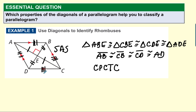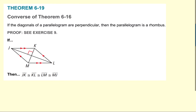When all the sides of a parallelogram are congruent, it must be a rhombus. So anytime you see a parallelogram with diagonals that are perpendicular, you can say it's a rhombus. Theorem: if the diagonals of a parallelogram are perpendicular, then the parallelogram is a rhombus.